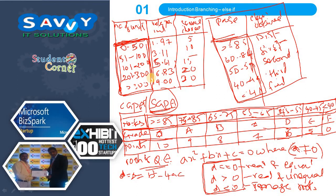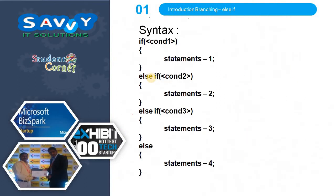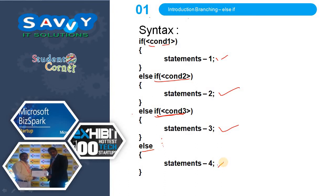Now we are going to discuss the syntax. If condition 1 is true, then statement 1 will be executed. Otherwise, we check condition 2; if true, statement 2 is executed. Otherwise we check condition 3; if true, statement 3 is executed. If that is also false, we keep checking — somewhere it ends with the else block, and statement 4 will be executed. That is the main concept of Elsif.